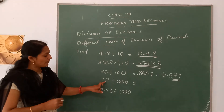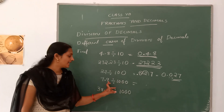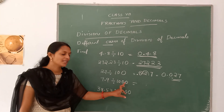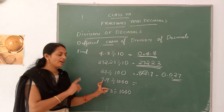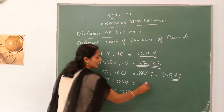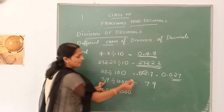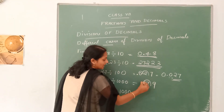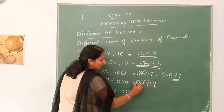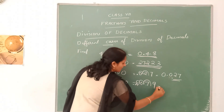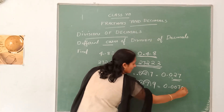Then 7.9 divided by 1000. When we divide a decimal number by 1000, the decimal moves from right to left 3 digits. First write 79, move the decimal three places to the left, and we get the answer 0.0079.